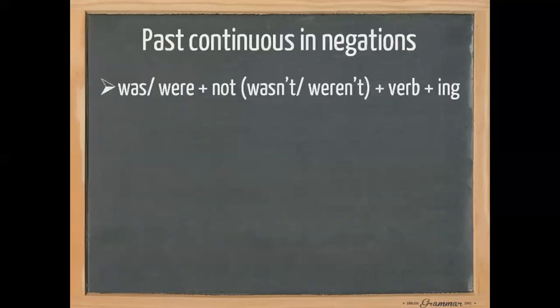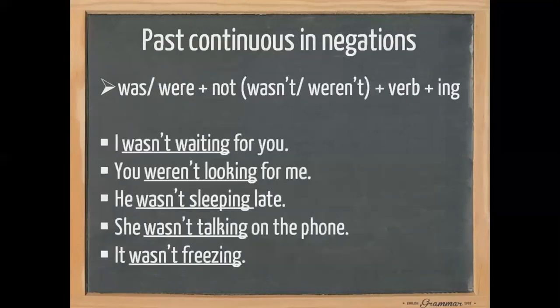Now, past continuous and negation — with negative, we use 'was' or 'were' plus 'not', which is 'wasn't' or 'weren't', plus the verb base form, plus '-ing'. We have many examples. I was waiting for you becomes: I, plus 'not', which is 'wasn't', plus 'wait' — base form — plus '-ing': waiting for you. So: I wasn't waiting for you.